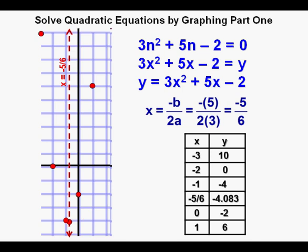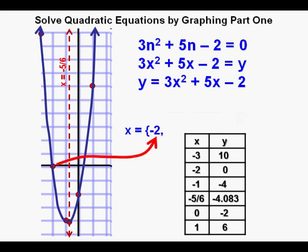And here are all the other points from the table plotted on the coordinate grid. Here is the curve drawn through the points. And he sees one x-intercept at -2. And it makes sense since he sees the coordinate (-2, 0) in the table.